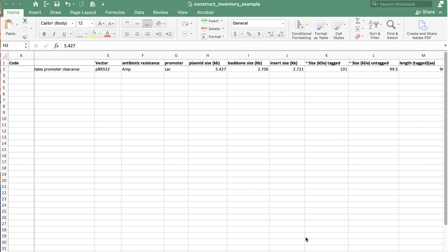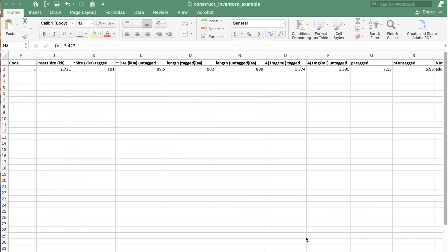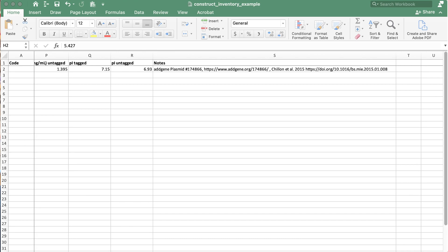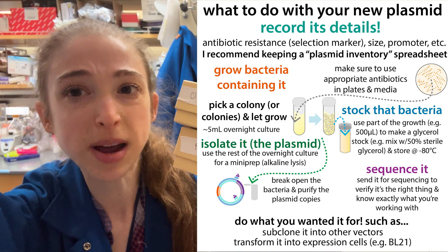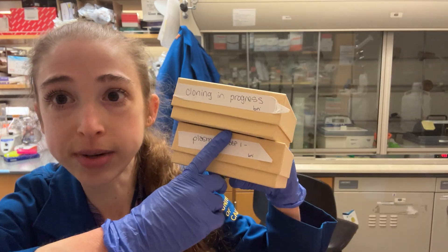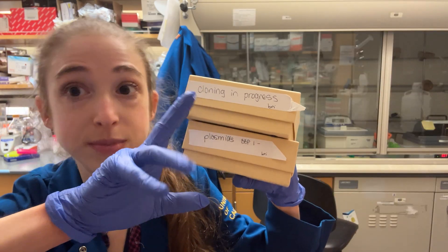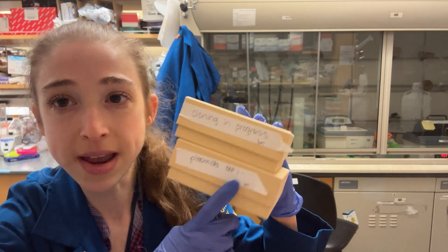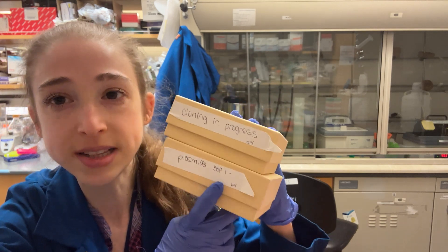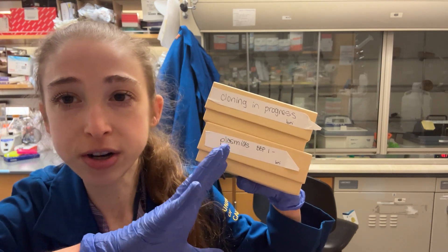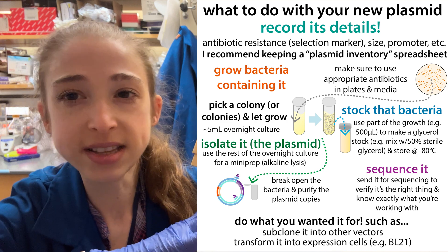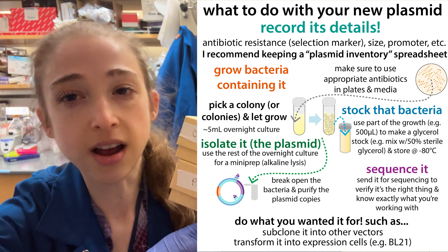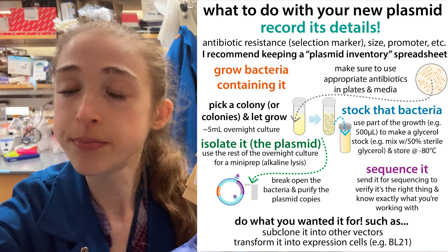This includes things like keeping a detailed plasmid inventory with information about all the different constructs. It includes keeping my cloning intermediates — before they're verified sequences — physically separated from my actual plasmids that I have sequenced and know are good. This also includes things like making glycerol stocks. So here's just a quick look.